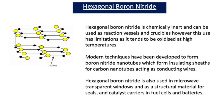Hexagonal boron nitride is chemically unreactive — we call it inert — and it can be used as reaction vessels and crucibles, though this use has limitations as it tends to oxidize at high temperature. Modern techniques have been developed to form boron nitride nanotubes, which form insulating sheaths for carbon nanotubes acting as conducting wires. Hexagonal boron nitride is also used in microwave transparent windows and as a structural material for seals and catalyst carriers in fuel cells and batteries.